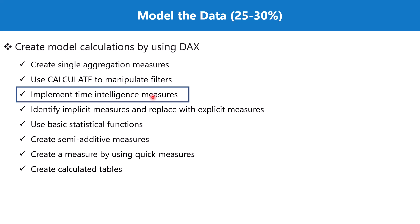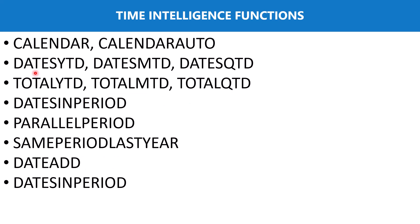The measures that are based on these time intelligence functions are called time intelligence measures. These are very simple to use functions. We are going to look at some of these time intelligence functions and then see how they are used to build time intelligence measures. Here is a list of DAX time intelligence functions we will be exploring. In this first video we are going to look at CALENDAR and CALENDARAUTO. If you remember, we had a topic related to the common date table.